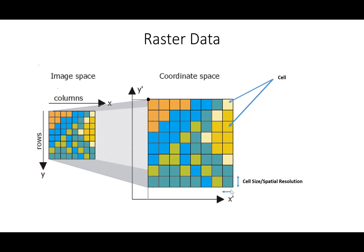There are a few pieces of information that define a raster dataset. First is the number of rows and columns, which defines the spatial extent, and its cell size. Cell size is also referred to as grid size, or more commonly spatial resolution — specifically horizontal spatial resolution. A horizontal spatial resolution of 30 meters means that the x and y size of each cell in that raster dataset is 30 meters.